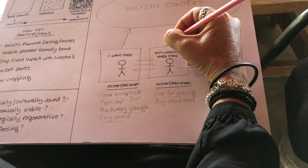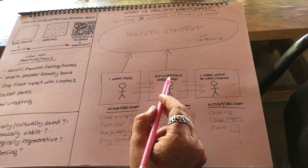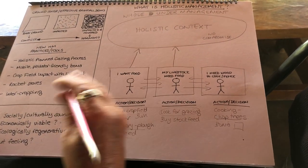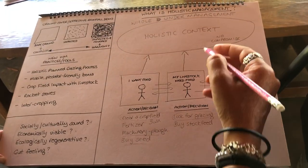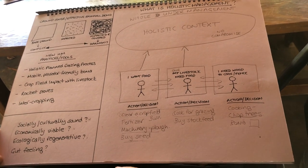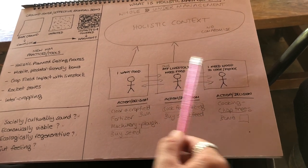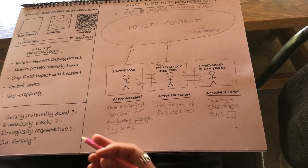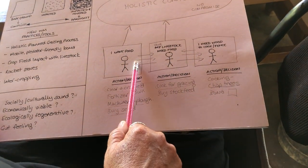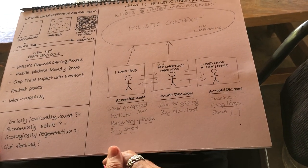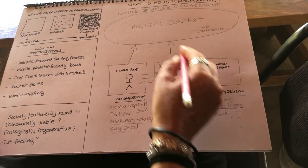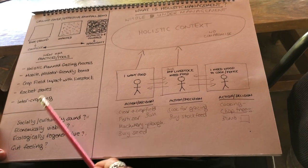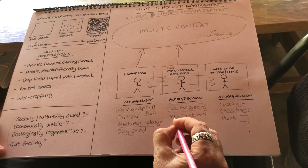Now someone comes along and says 'my livestock need food.' With the holistic context, because everyone's livestock need food, they've learned about holistic planned grazing — getting all animals into one big herd or a couple of big herds. So it becomes 'our livestock need food.' There's no more conflict over grazing. Everyone works together, putting livestock into one mobile predator-friendly boma. This stops human-wildlife conflict and human conflict, saves money on herders and on losing livestock to wildlife, and the livestock become a tool to grow more grass — leading to effective rainfall, rivers flowing longer, and fuller boreholes.